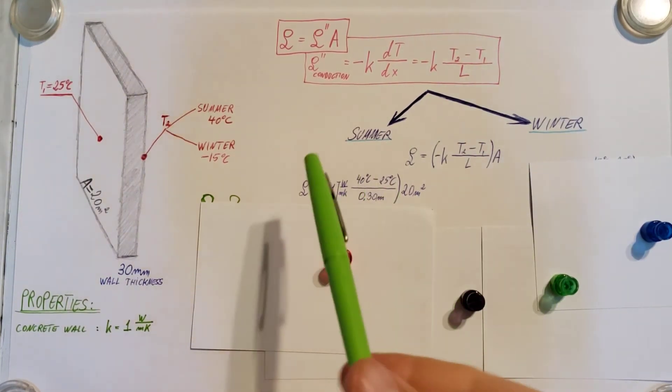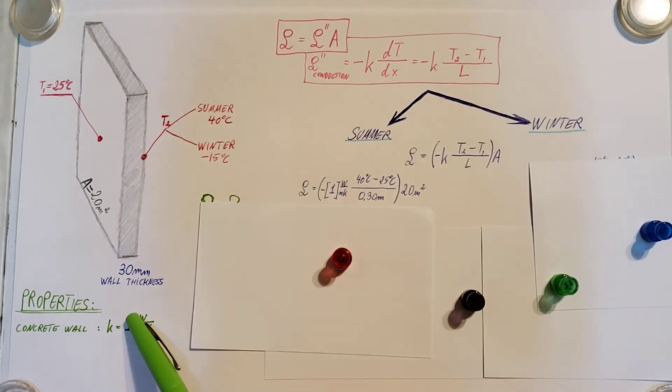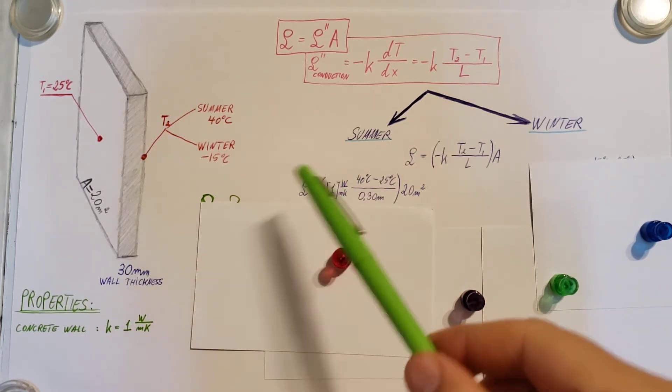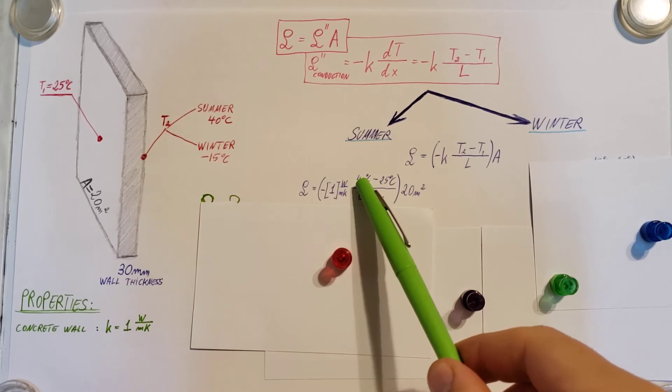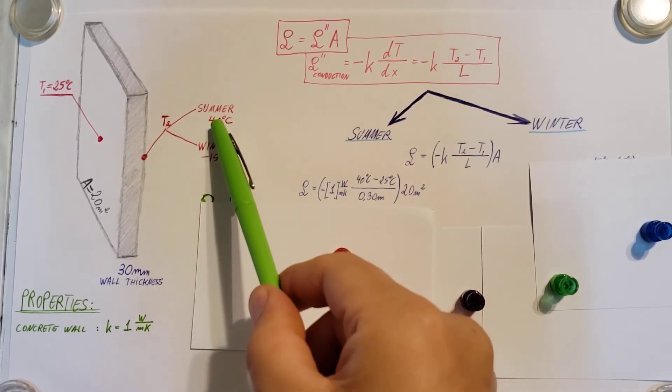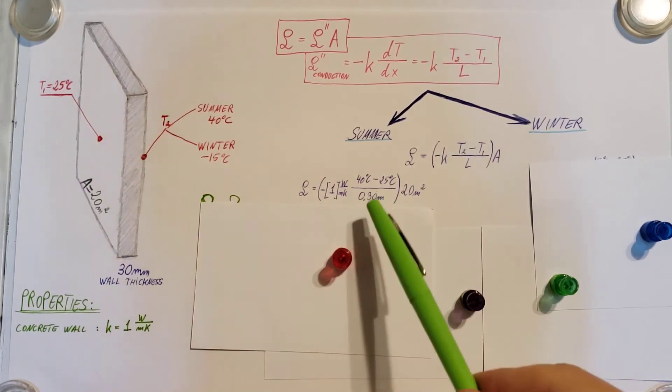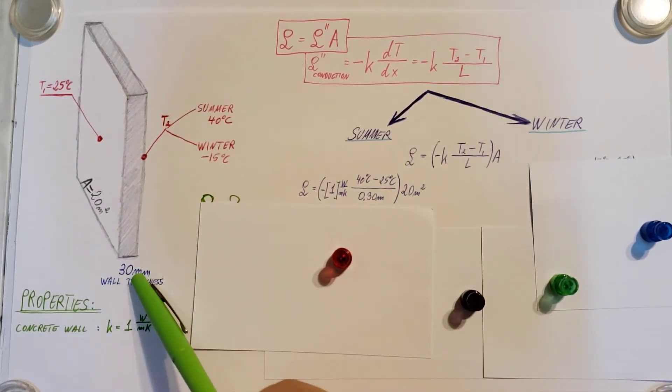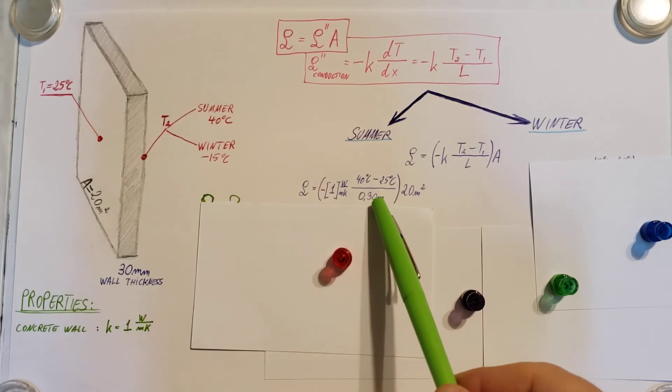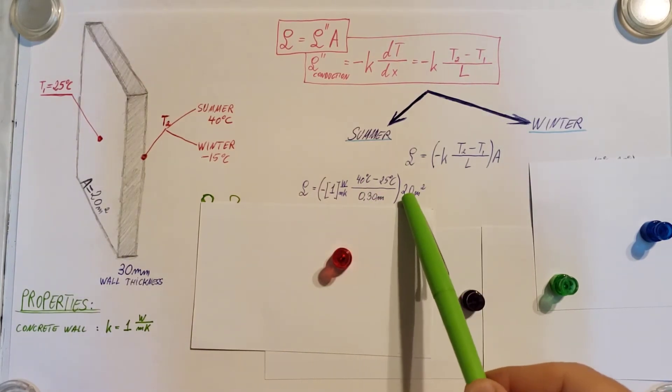For the summer, I'm going to take my K right here, our property for the wall. We're going to plug it in. We're going to plug in our temperatures. For summer, 40 minus 25, which is our T1. Divided by our thickness. Make sure you don't leave it in millimeters. Turn it into meters. Times our surface area.